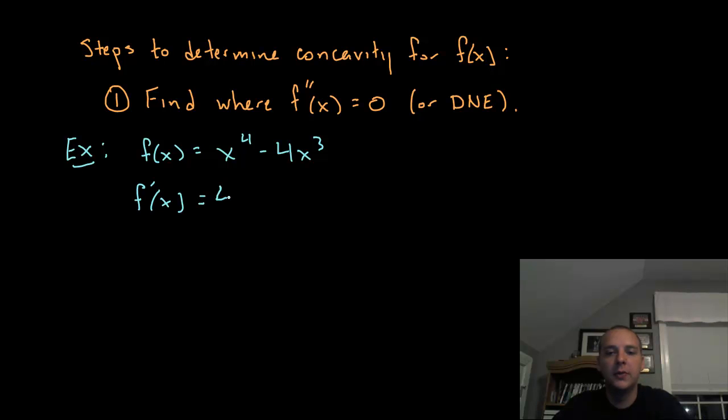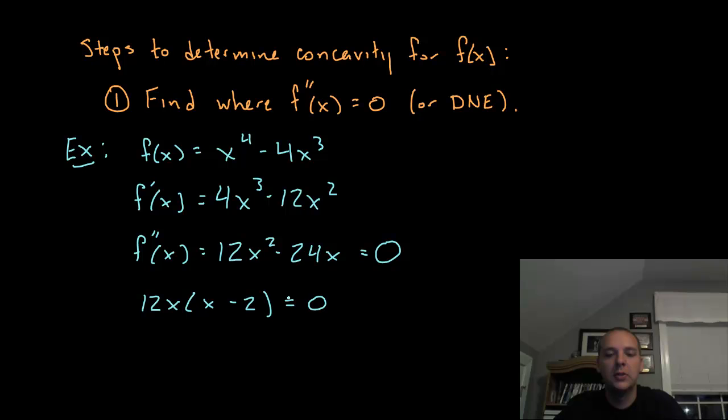First we need the first derivative: f'(x) = 4x³ - 12x². Then the second derivative would be f''(x) = 12x² - 24x. Now we want to see where that's equal to zero. You could factor out 12x and get 12x(x - 2). So this would be zero at x = 0 or x = 2. Either of these places, the second derivative would be zero.